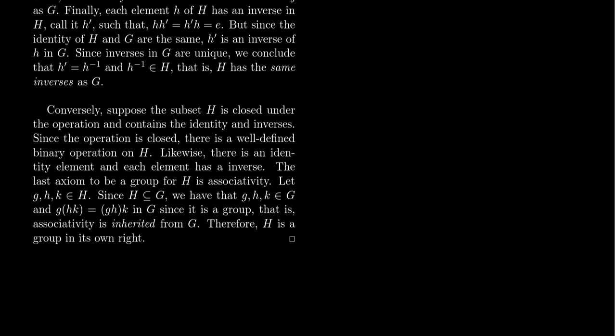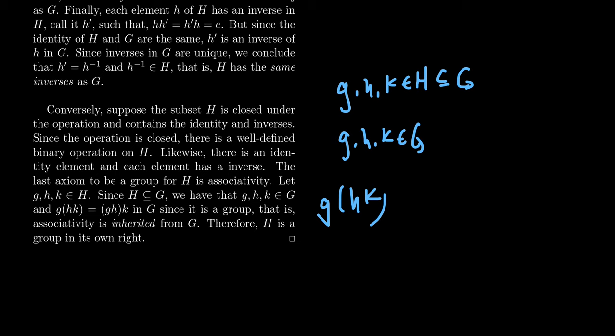What we have left is to worry about associativity. If we take elements g, h, and k inside H, since H is a subset of G, these elements are also in G. A statement like g(hk) is a product in H, but it's also a product in G, and in G the operation is associative. So we can rearrange parentheses. Associativity in G implies associativity in H. We often say that associativity is inherited from G.